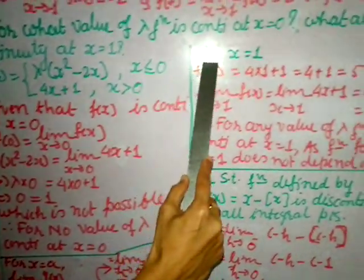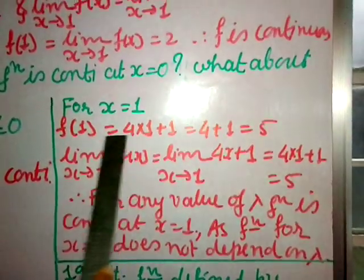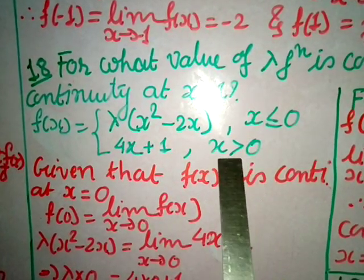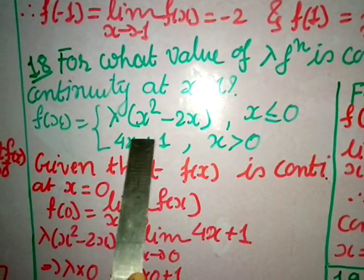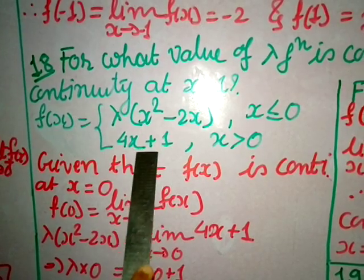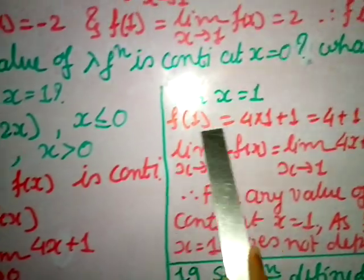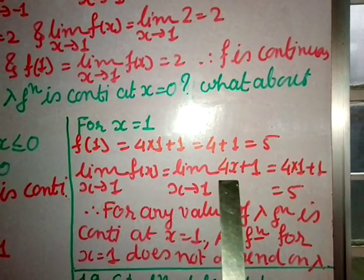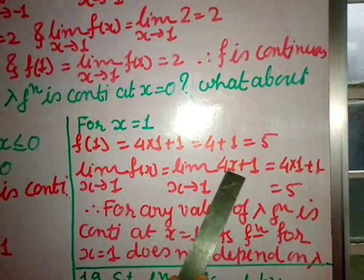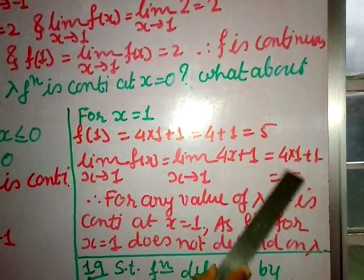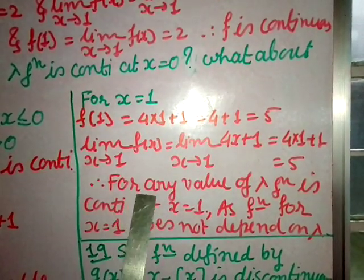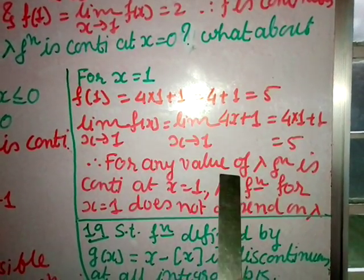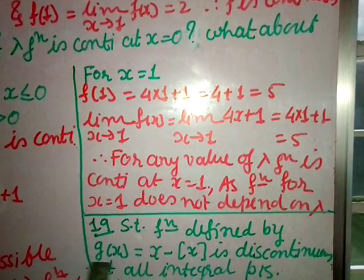For continuity at x = 1: since x = 1 > 0, only the second function 4x + 1 applies — both for f(1) and for the limit. f(1) = 4(1) + 1 = 5. lim(x→1) 4x + 1 = 5. Both are 5, and λ is not involved at all. Therefore, for any value of λ, the function is continuous at x = 1.